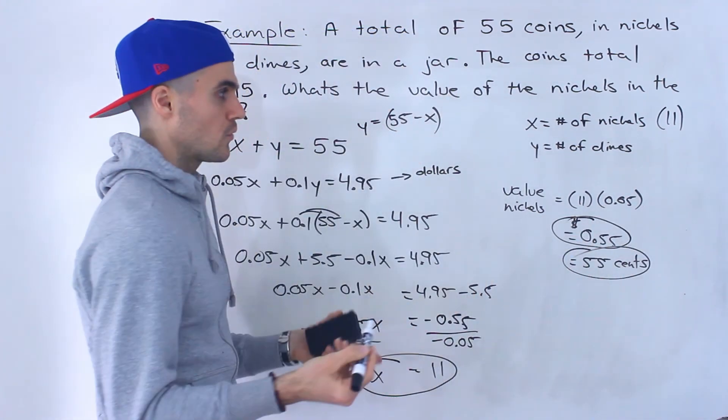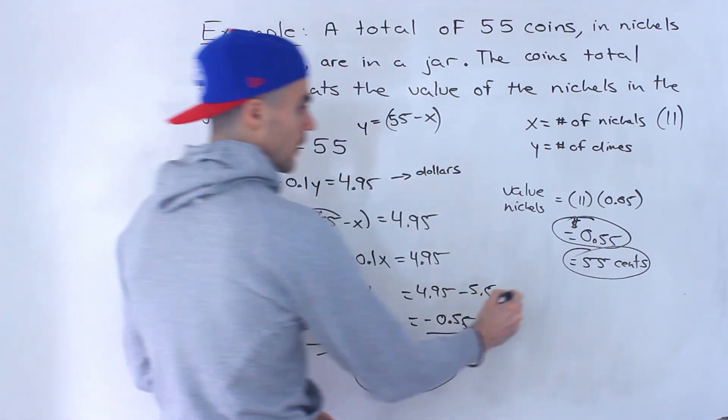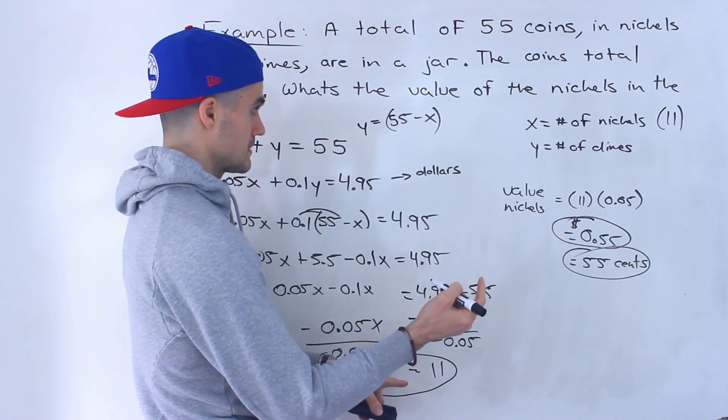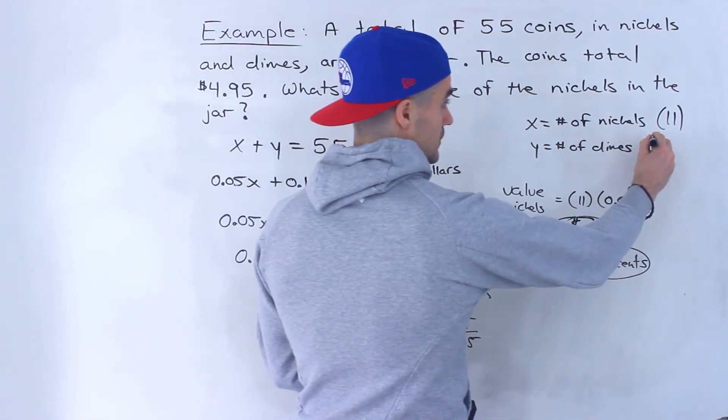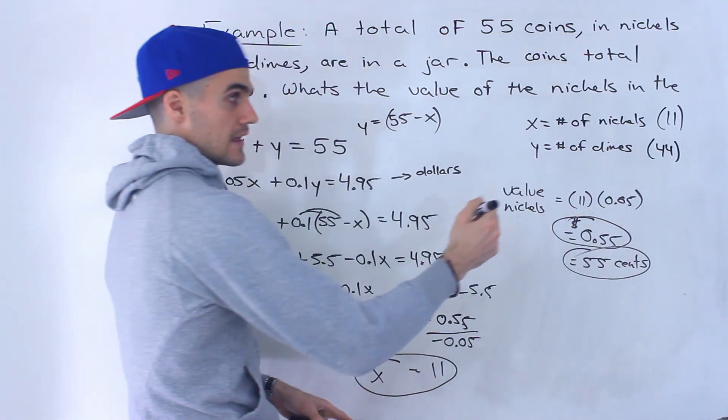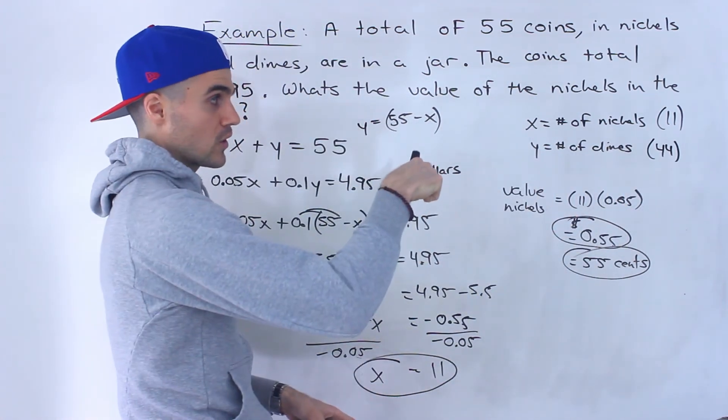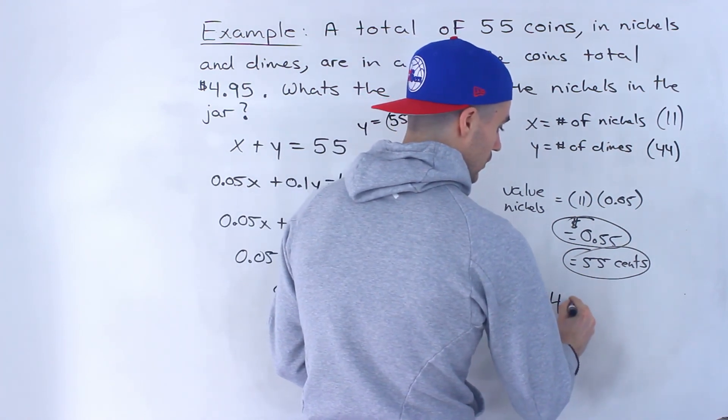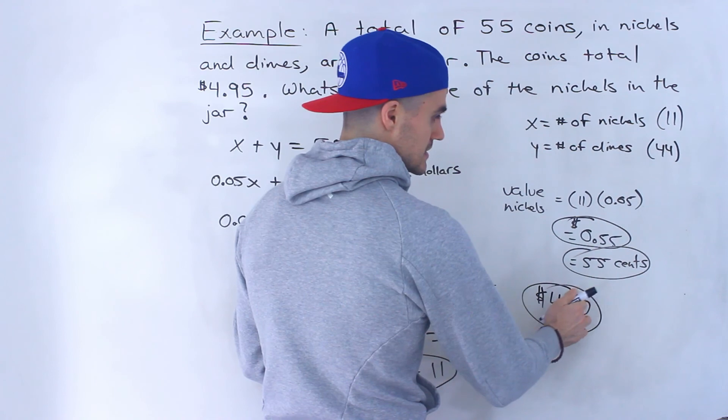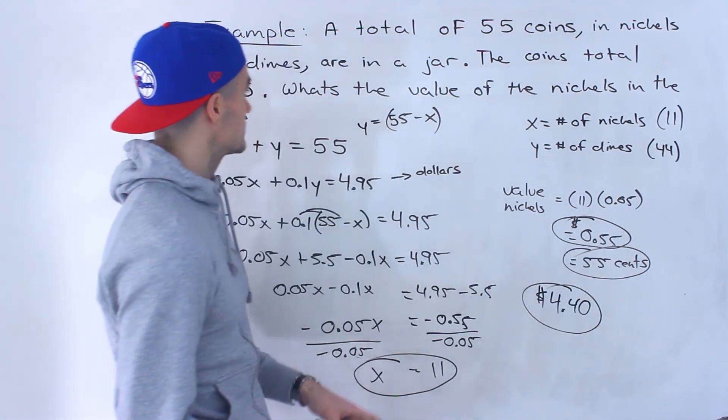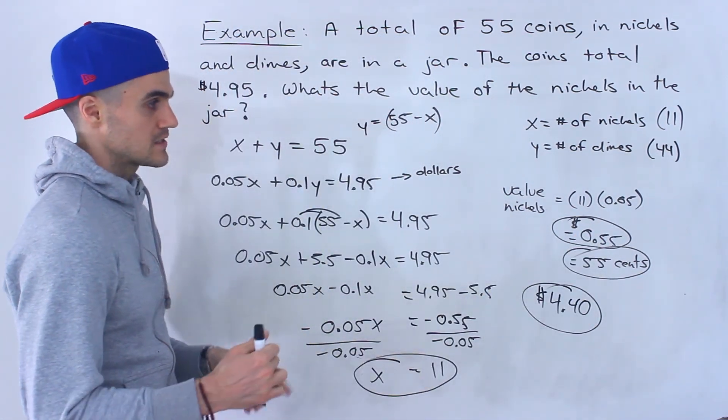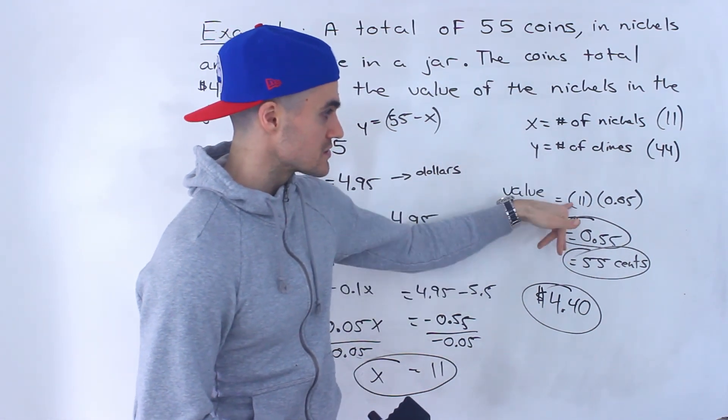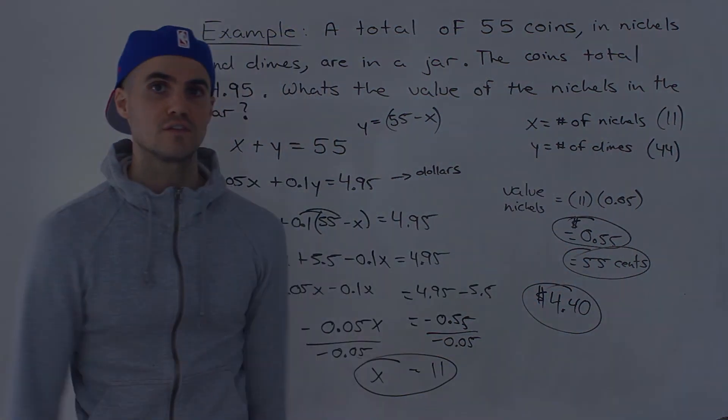We actually don't have to solve for y. But if we did solve for y, we could take this, plug it in here. Y would be 55 minus 11, which would give us 44. So there would be 44 dimes. And the value of the dimes would be 44 times 0.1 or 10 cents, so $4.40. And notice that this plus that gives us that 4.95. So you can do a check as well. But they were asking for the value of the nickels. The value of the nickels in the jar, because there's 11 of them, is 55 cents.